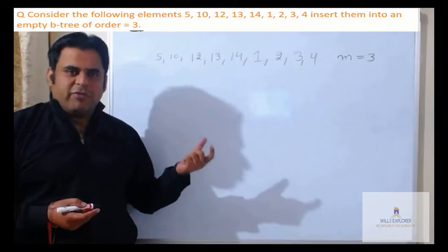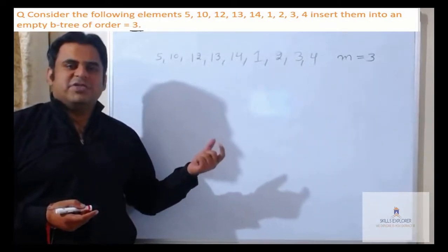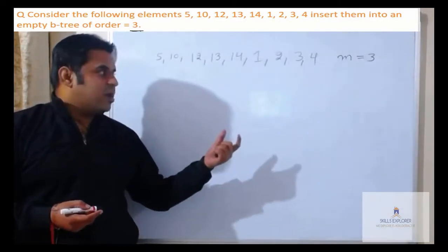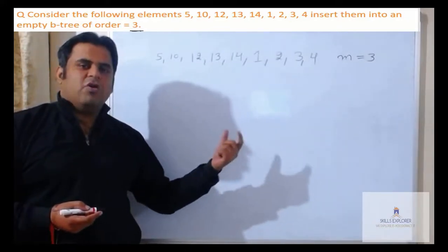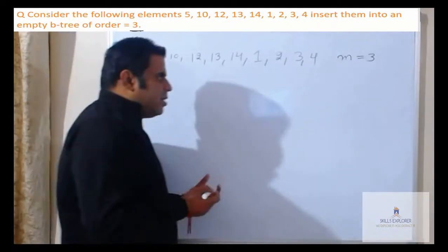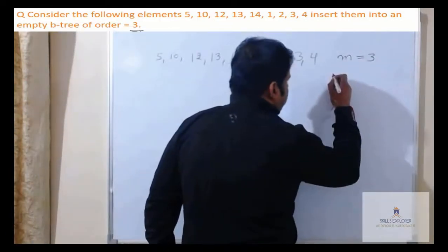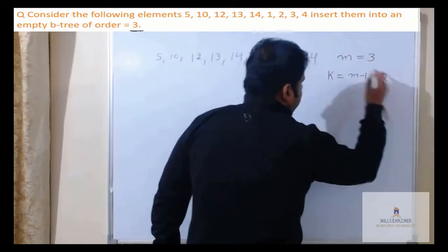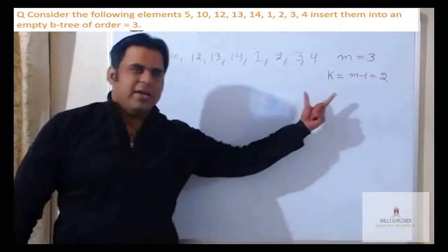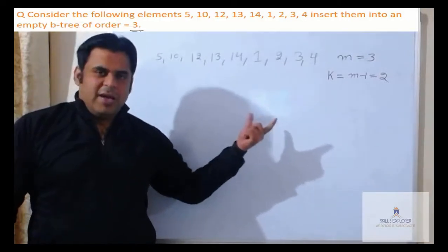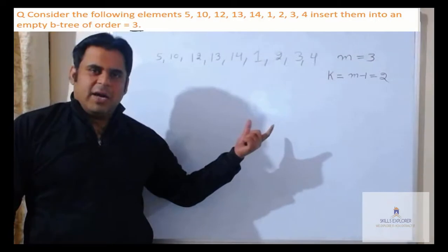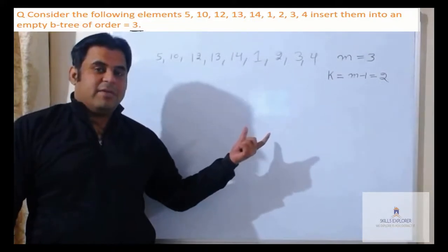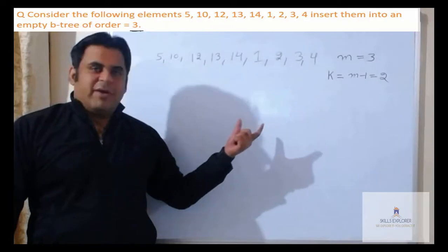M plays a very crucial role. M ki value 3 hai to kisi node ke maximum 3 children ho sakte hain. Is M ki value se ya order ki value se hum maximum keys find out karte hain. Keys ka formula: key = M - 1. M ki value 3 hai to keys = 2, meaning ek node maximum 2 keys hold kar sakta hai. Yeh B-tree ka advantage hai — binary tree me ek node me ek hi key store ho sakti thi, but B-tree me more than 2 keys store ho sakti hain, isliye height kam hoti hai.